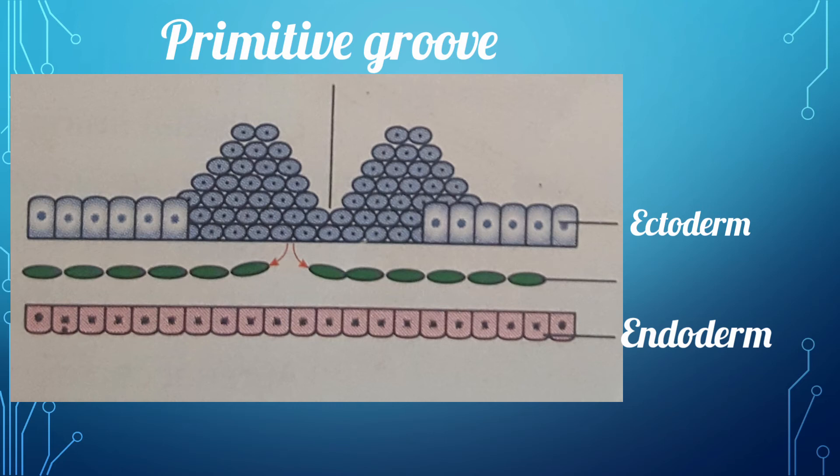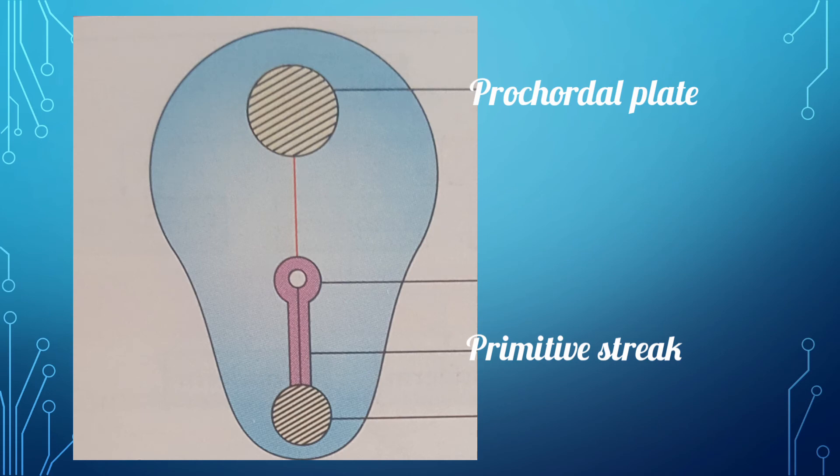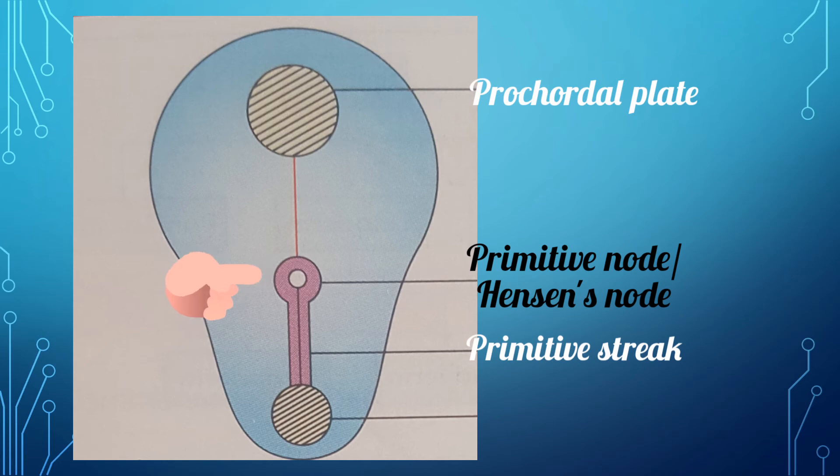After this, on the cranial end of the primitive streak, a rounded elevation called primitive node or Hensen's node appears. Following the formation of primitive node, a depression appears in its center which is called the blastopore. From this blastopore, a solid cord of cells grow between the ectoderm and endoderm up to the prochordal plate and form the notochord.